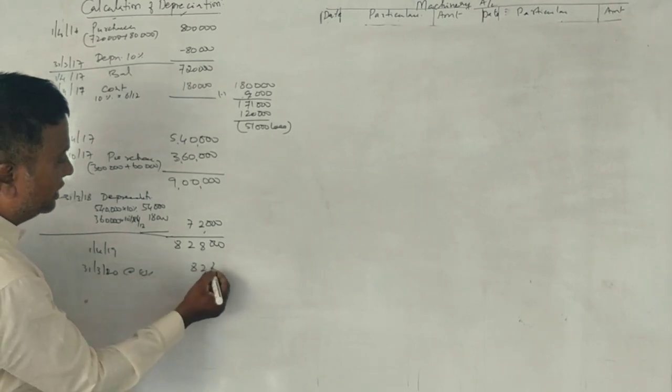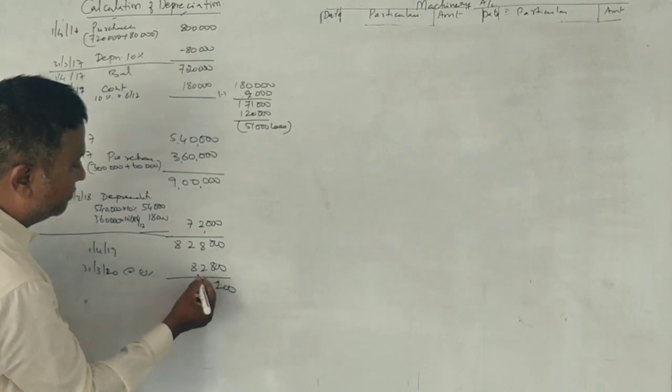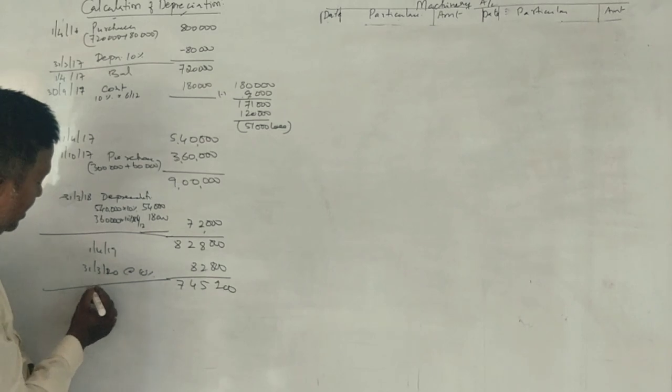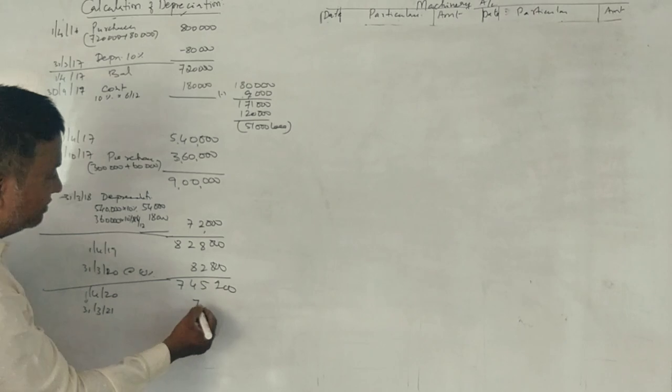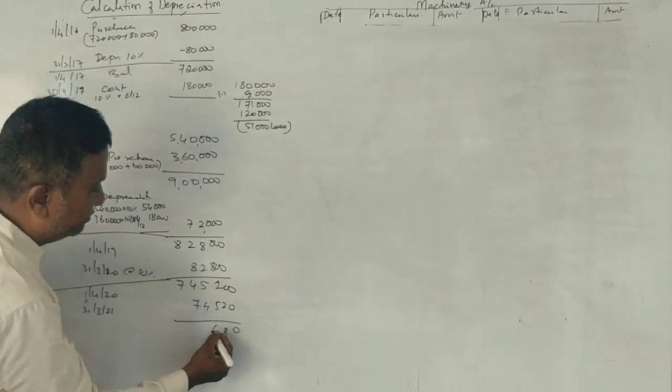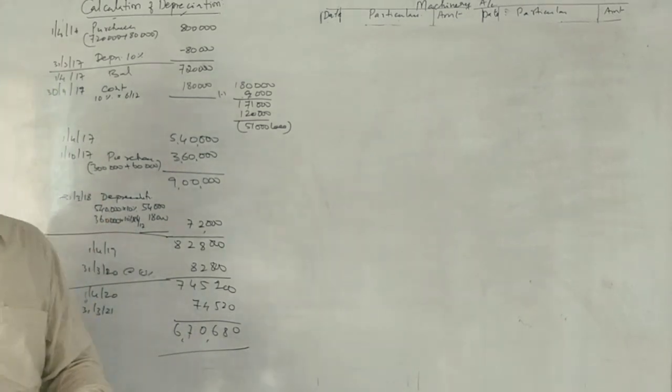$82,800. The fourth year is 1st April 2020, 31st March 2021, $74,520. How do you record this? This is the calculation.